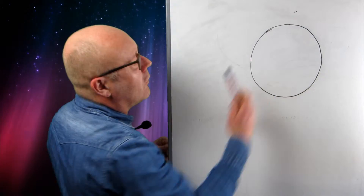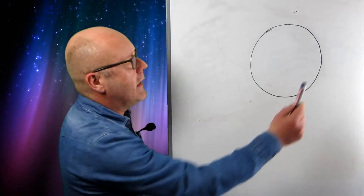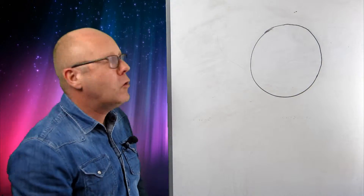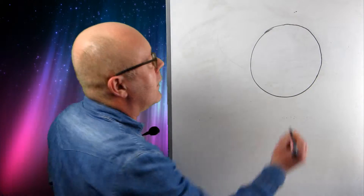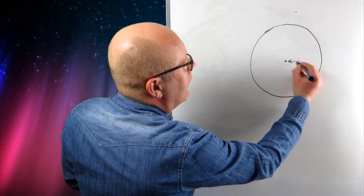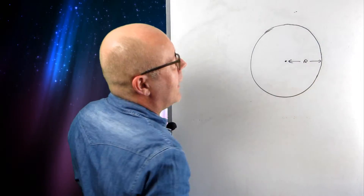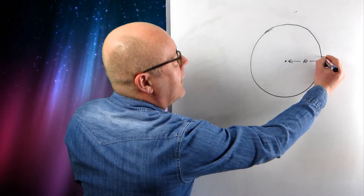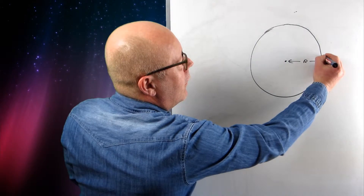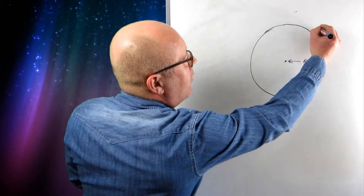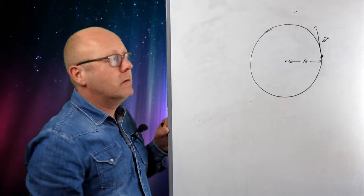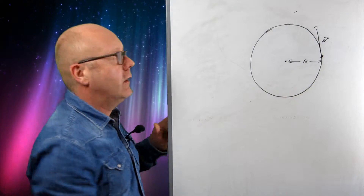You have a circle, and you have the object which is going around the circle, i.e. in circular motion. This circle has a centre here and a certain radius. The object, say, would be here, and it's turning around. Therefore, it's got a velocity which is tangent to its motion. This is called linear velocity.